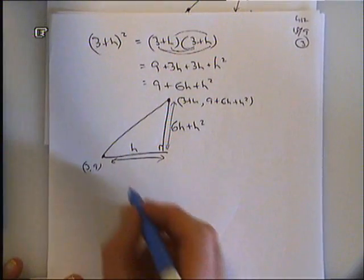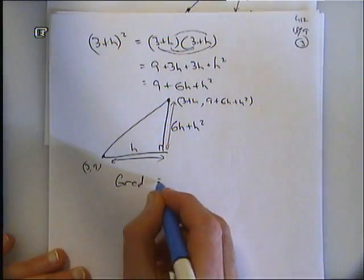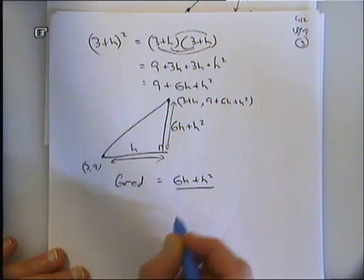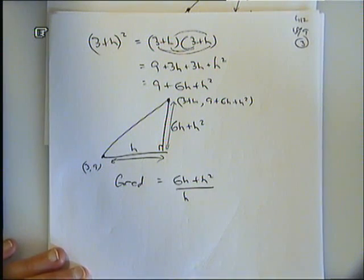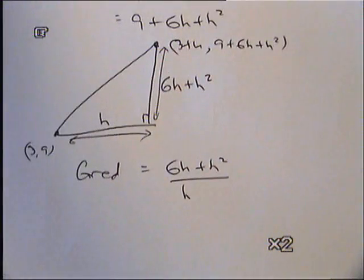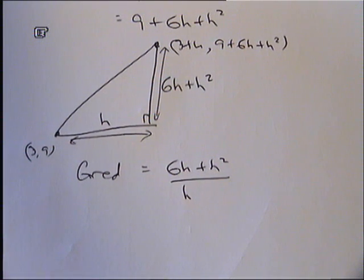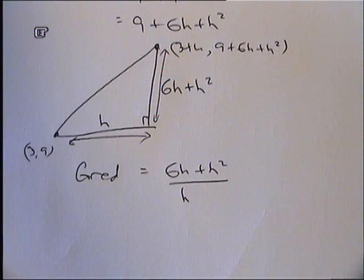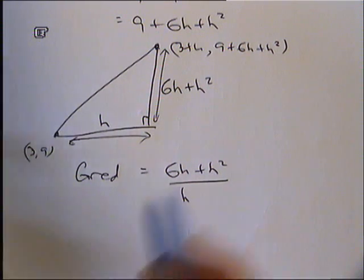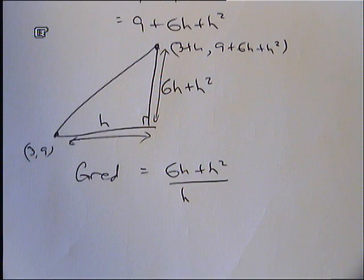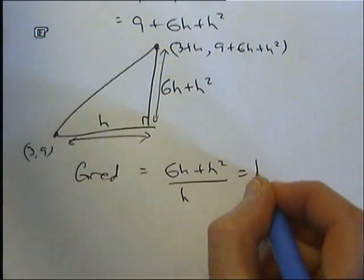So the gradient will be the vertical one divided by the horizontal one, which is 6h plus h squared divided by h. If I want to work that out, or not work it out, simplify it, what would it be good to do to that expression if I wanted to simplify that at this point? What can I do to the top of that fraction, the numerator of that fraction? What can I do just to write it down using less ink? How can I rewrite the numerator of that fraction? What is there in both of these? Take the h out as a factor.